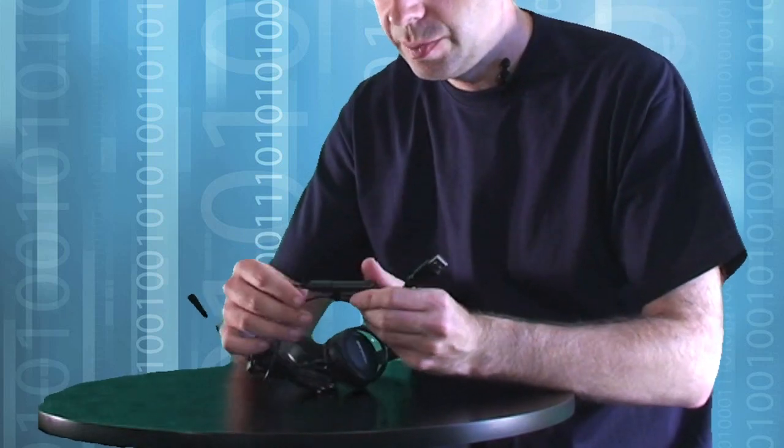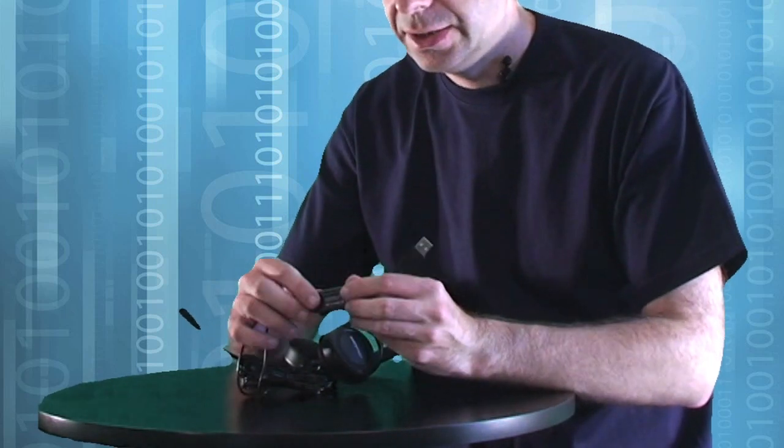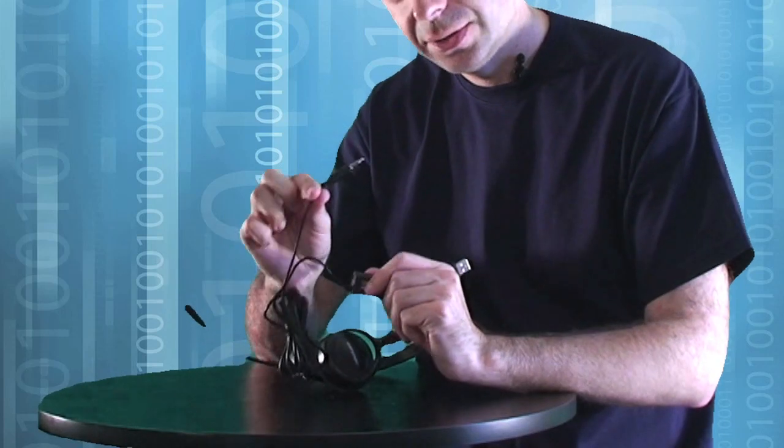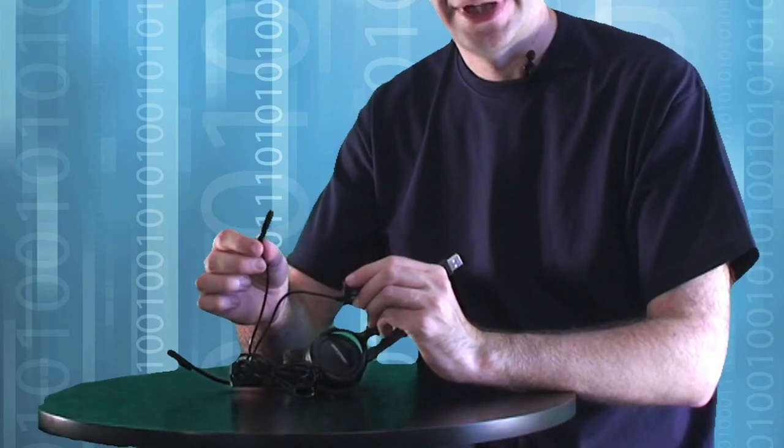So if you're using it via USB you put the 3.5mm jack in this breakout box here, and if you want to use it with an MP3 player you just pull this jack out and then you plug that into your iPod or MP3 player.